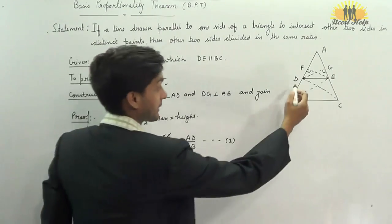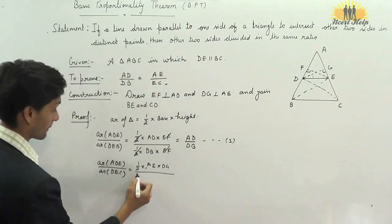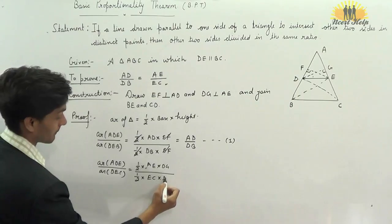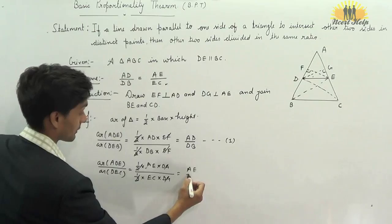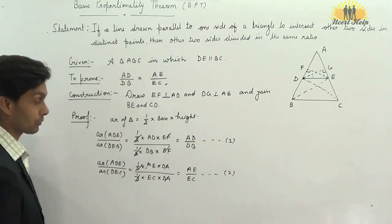For area of triangle DEC, if you take EC as base, then DG will be the perpendicular. Canceling half and DG, we get it is equal to AE upon EC. That is equation number 2.